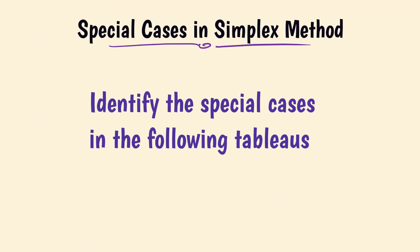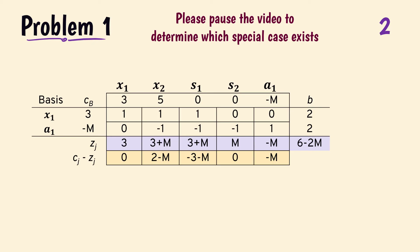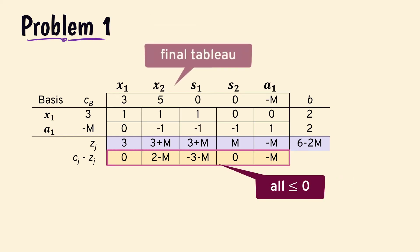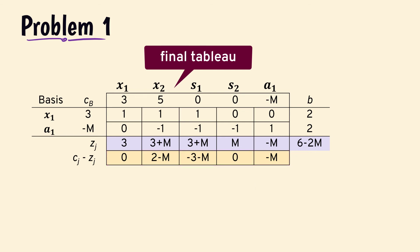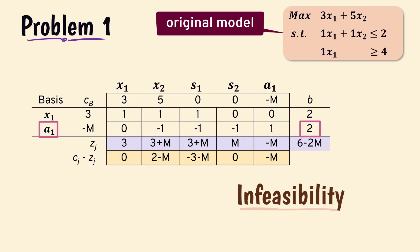Now let's examine a few simplex tableaus and determine which special cases exist. Problem 1. We see that there are no positive values in the net evaluation row, so we have the final tableau. However, the artificial variable a1 is still basic with a positive value of 2. Therefore, the situation here is infeasibility. Here is the model that results in this final tableau.